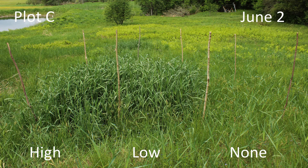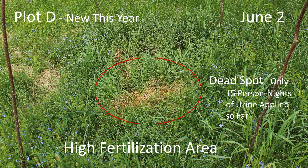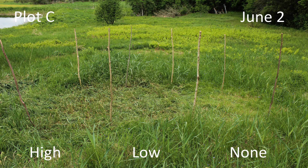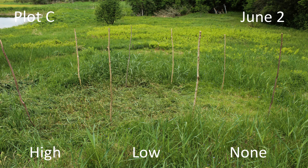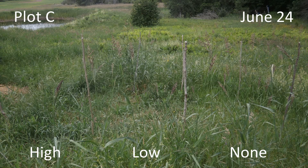In plot D, which had no reed canary grass, the high-frequency fertilization site developed a dead spot. As this was the smaller plot, I suspect over-fertilization played a part in it, though only some of the grass was killed and over the summer the remaining grass slowly spread.